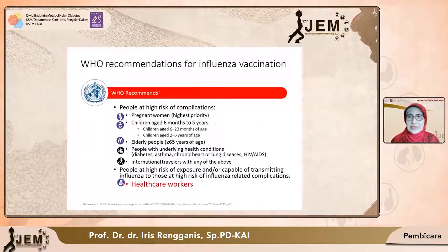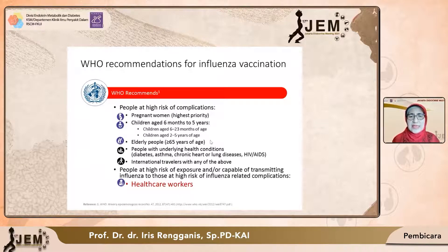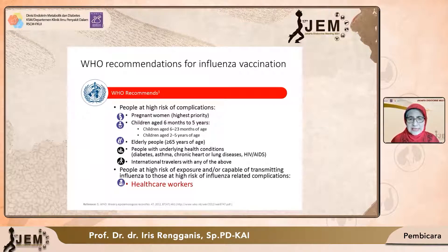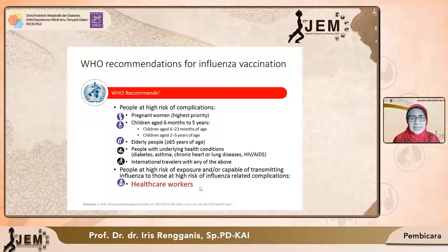WHO merekomendasikan vaksinasi influenza pada wanita hamil, pada anak-anak 6 bulan sampai 5 tahun, kemudian pada lansia di atas 65 tahun — kalau di Indonesia di atas 60 tahun. Kemudian orang-orang dengan underlying disease atau penyakit komorbid, misalnya diabetes, asma, chronic heart disease, lung disease, HIV AIDS, dan lain-lainnya. Juga untuk international travelers, serta health workers termasuk yang penting sekali untuk dilakukan vaksinasi influenza, apalagi kalau health workers mempunyai penyakit komorbid seperti diabetes.